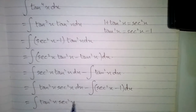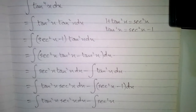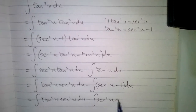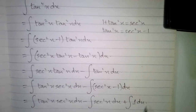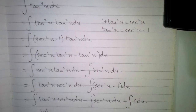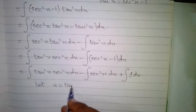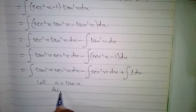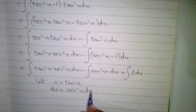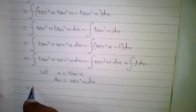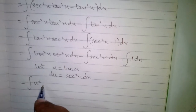So we have the integral of sec²x plus the integral of 1 dx. Now we will suppose tan x as u, so we have u equal to tan x, and the differential du is equal to the derivative of tan x, which is sec²x dx. So the first integral becomes the integral of u² du.